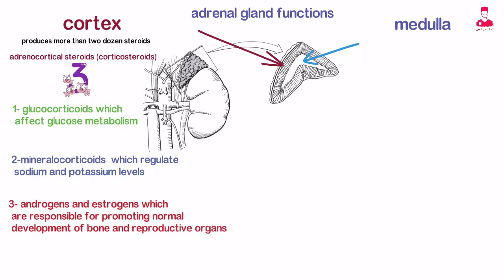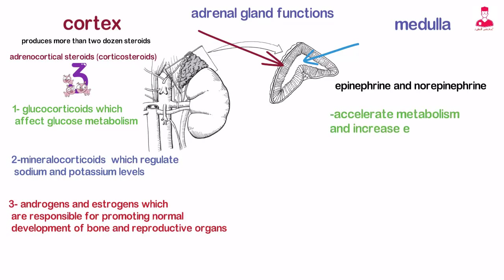The adrenal medulla produces the hormones epinephrine and norepinephrine, which accelerate metabolism and increase energy, and are responsible for the body's fight-or-flight response.